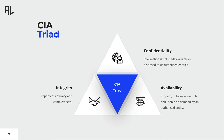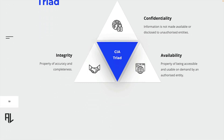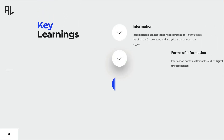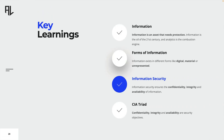We just covered all three of the security objectives, and this takes us to the end of this lecture. Let's have a look at the key learnings. Information is an asset that needs protection. Information exists in different forms like digital, material, or unrepresented form. Information security ensures the confidentiality, integrity, and availability of information — please remember this definition, it is very important. Confidentiality, integrity, and availability are the so-called security objectives.